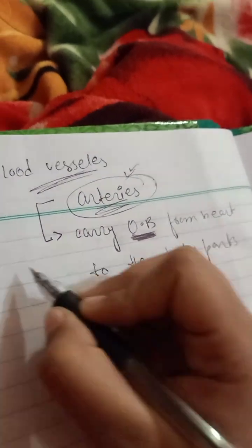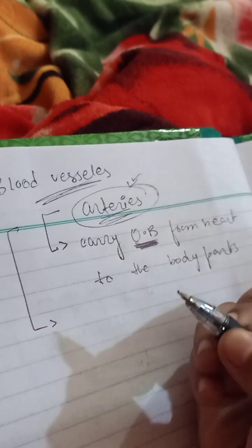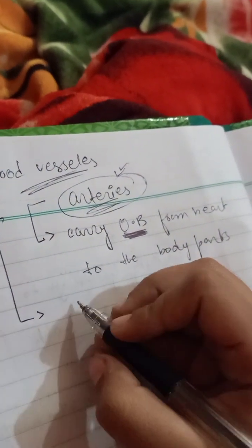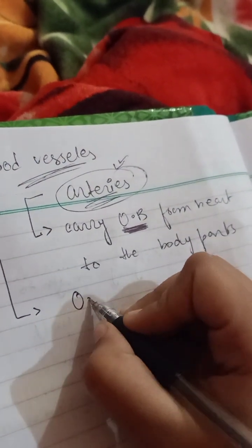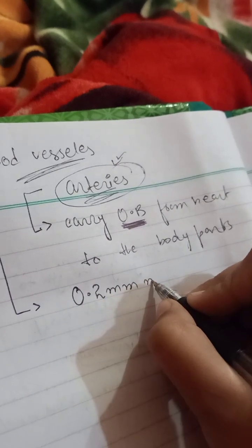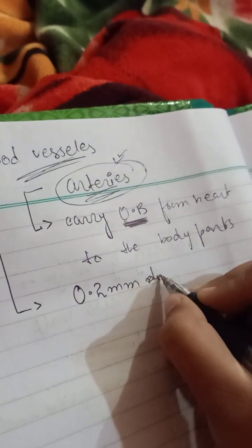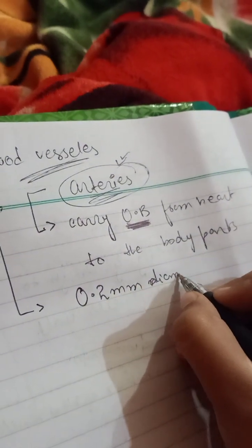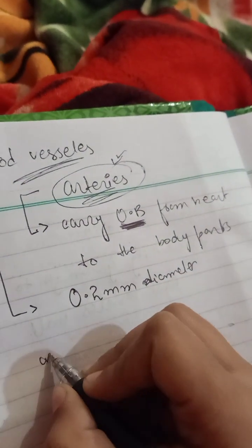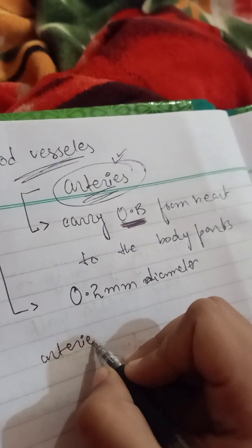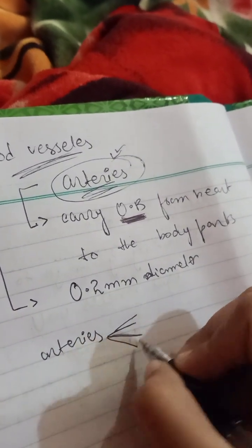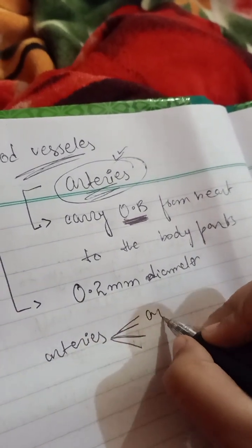If we talk about the artery, the artery is made up of three layers, as you guys all know. The artery has a diameter of 0.2 millimeters. Arteries are further individually divided into the arterioles.